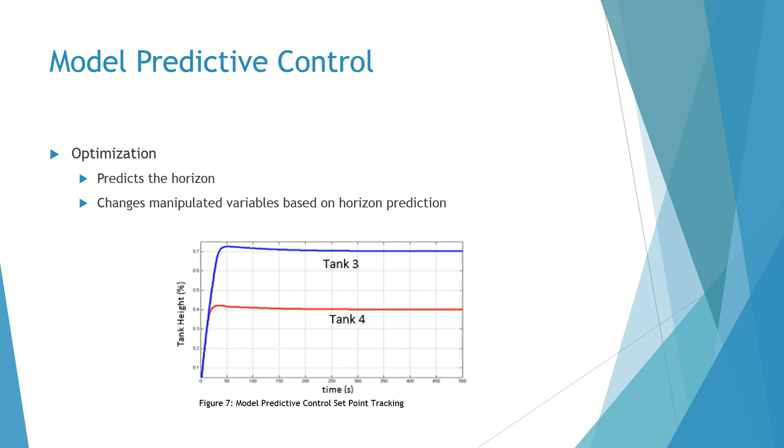We also found that model predictive control performed a lot better over a wider range of conditions than the non-interacting and interacting PID controllers. This is because it uses the equations associated with the system and is able to optimize which outputs are best.